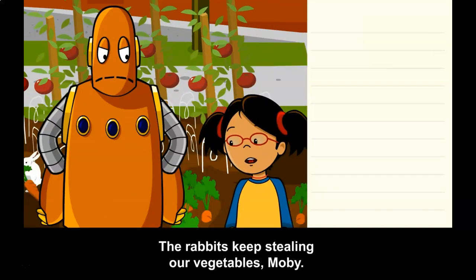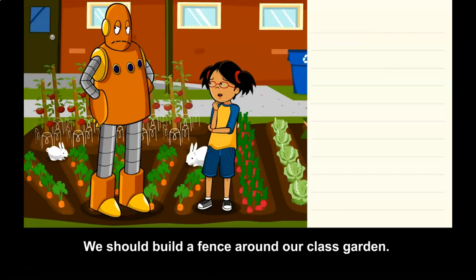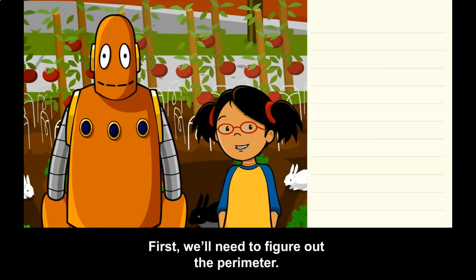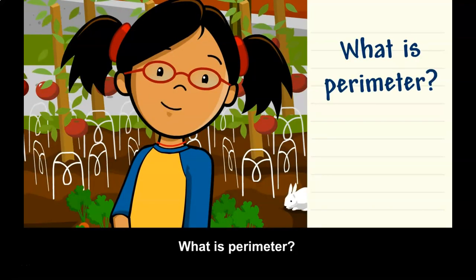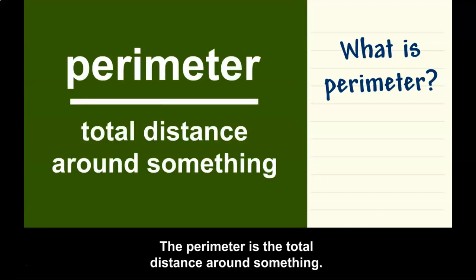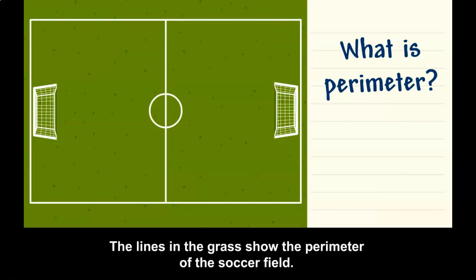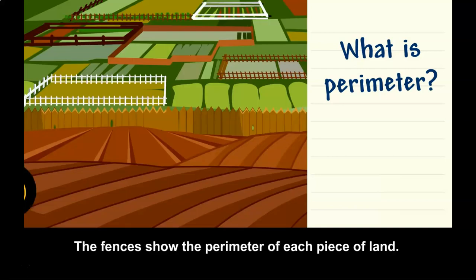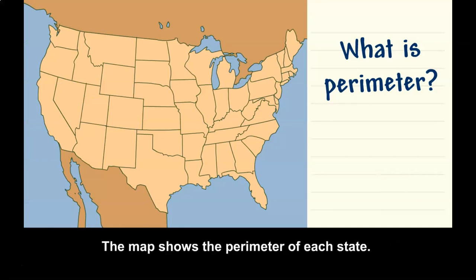The rabbits keep stealing our vegetables, Moby. We should build a fence around our class garden. First, we'll need to figure out the perimeter. What is perimeter? The perimeter is the total distance around something. You can think of the perimeter as an outline around something. The lines in the grass show the perimeter of the soccer field. The fences show the perimeter of each piece of land. The map shows the perimeter of each state.